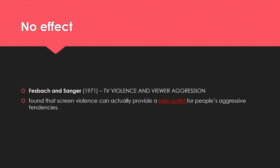Another argument against, by Feshbach and Singer, is that TV violence and media can actually be a safe outlet for people's aggressive tendencies. Similarly, pornography could help reduce sexual crime because people can act out their fantasies safely, and computer games allow players to run around and shoot people so they don't do it in real life. Screen violence can provide a safe outlet for people's tendencies.